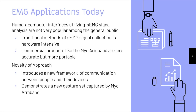EMG, or electromyogram, is an electrical signal produced through the contraction of muscle cells. sEMG is surface EMG measured from the skin. There are a variety of devices that can capture the signal; however, traditional methods of sEMG signal collection employ a lot of wires and require special preparation to operate, making them too cumbersome to set up and use on a daily basis. On the other hand, portable devices like the Myo armband, while less accurate, are much more convenient to use.